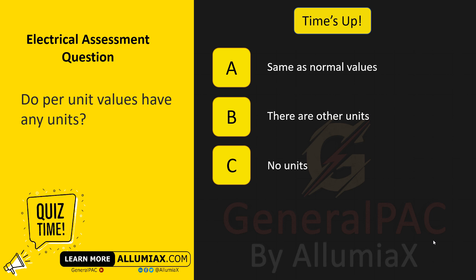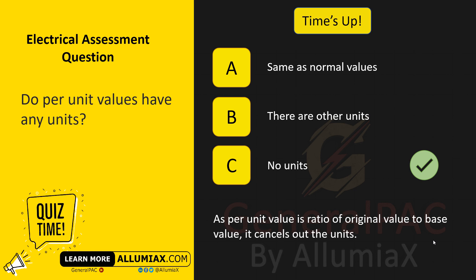The answer is C — no units. Since a per-unit value is the ratio of the original value to the base value, the units cancel out.